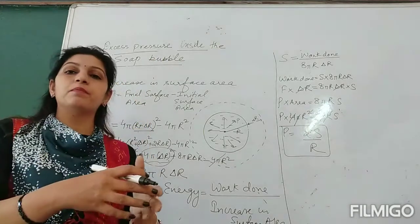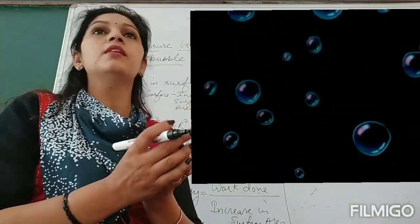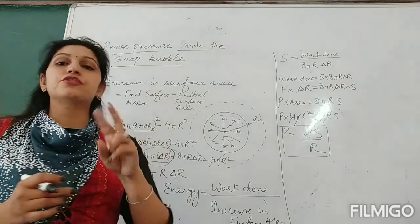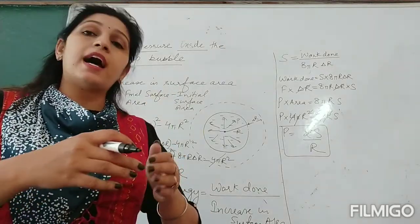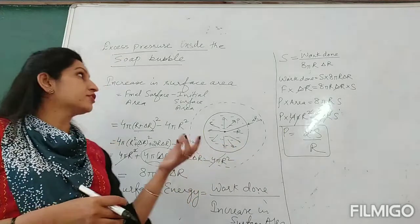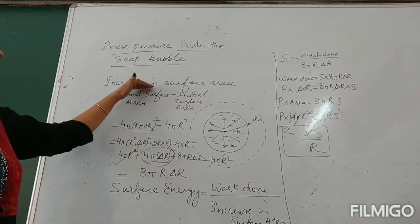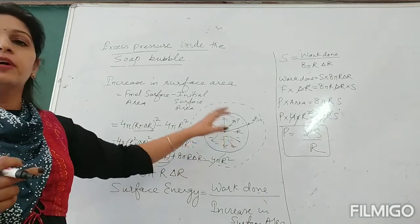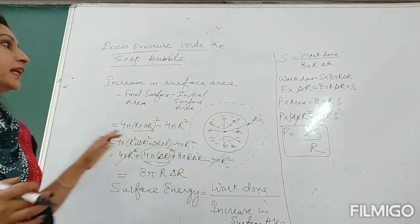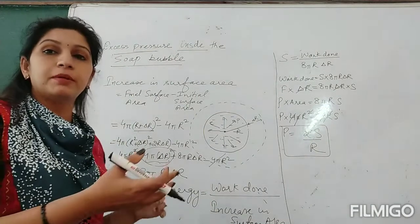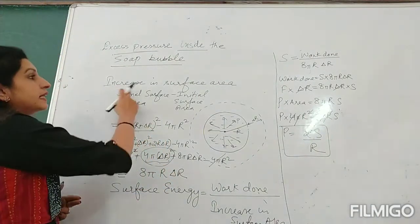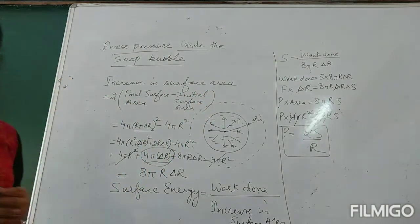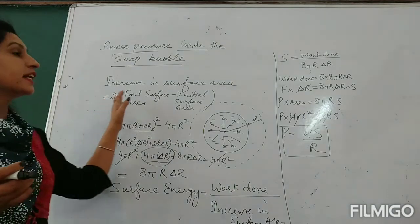You must have seen soap bubbles — they have 2 free surfaces. Air is inside the soap bubble as well as outside it. So it has 2 free surfaces. Whenever there is an increase in surface area it will be double compared to a liquid drop or air bubble, which are single surfaces. So for the soap bubble the increase in surface area will be 2 times (final surface area minus initial surface area).